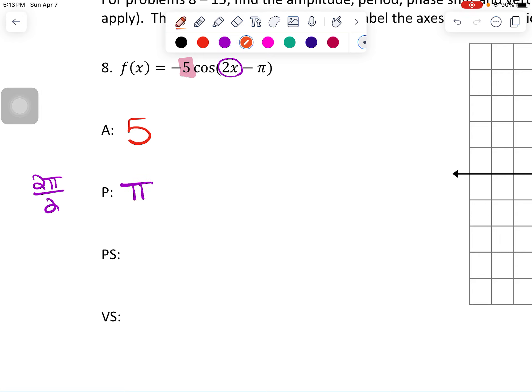Now, to figure out my phase shift, take the whole expression, set it equal to 0. So it's going to get me 2x is equal to pi. So x is equal to pi over 2. So phase shift is going to be right pi over 2. And last but not least, vertical shift. There is no vertical shift.